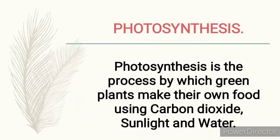I want you to learn this word: photosynthesis. So what is photosynthesis? Photosynthesis is the process by which green plants make their own food using carbon dioxide, sunlight, and water. We don't breathe in carbon dioxide — we only breathe out carbon dioxide — but plants need carbon dioxide so that they can grow well. This is photosynthesis: the process whereby plants manufacture their own food using carbon dioxide, sunlight, and water.